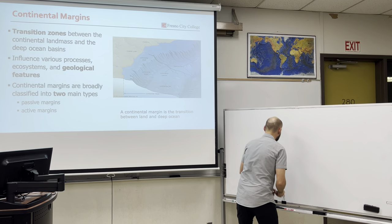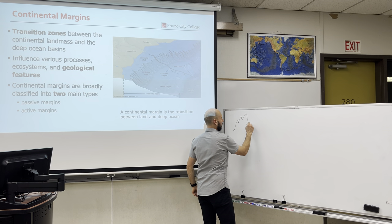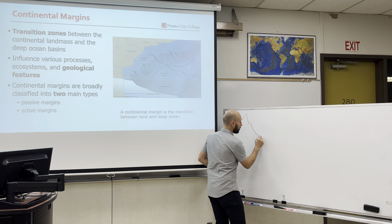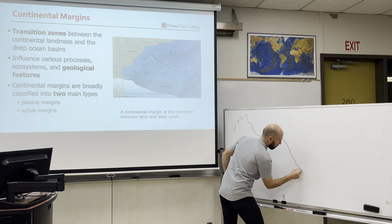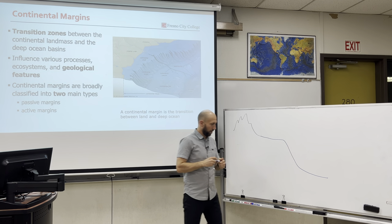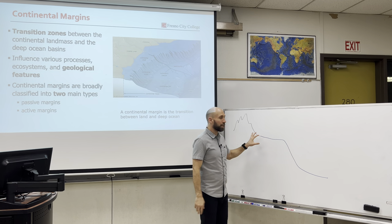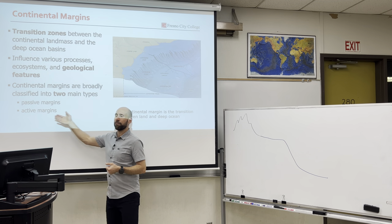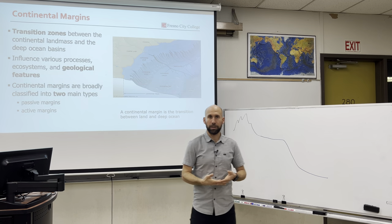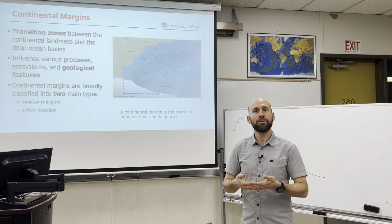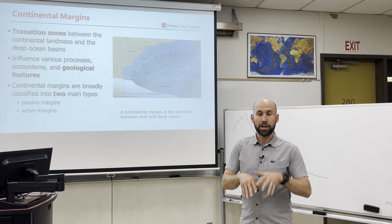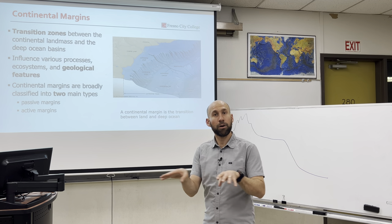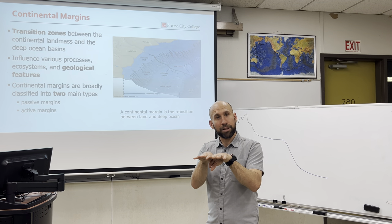A continental margin is the transition zone between land and ocean, composed of four main parts. What I've drawn here is a certain type of continental margin known as a passive margin, but we also have active margins, and this has to do with geology. Plate tectonics is the unifying theory of geology, and it states that the surface of the earth is covered by large, rigid blocks of rock that move around relative to one another and meet at plate tectonic boundaries.